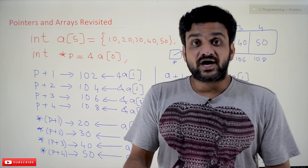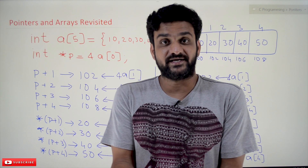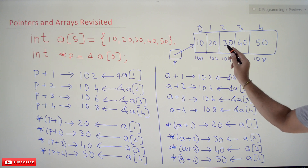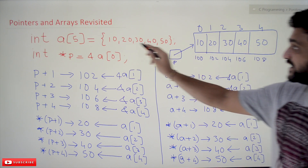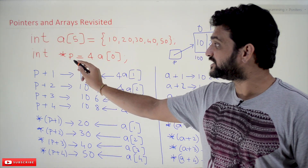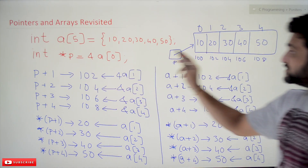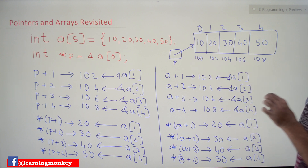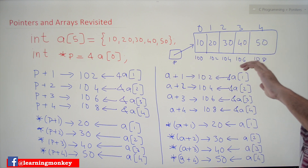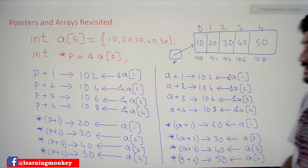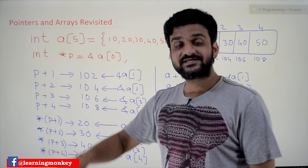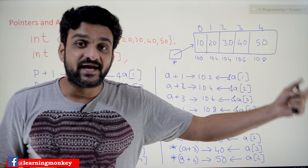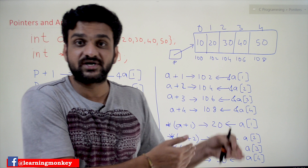In this class we'll try to have a more detailed understanding of pointers and arrays. In our previous class we discussed that an array has been created with values 10, 20, 30, 40, 50. A pointer P has been created pointing to the 0th position — a[0] means address 100, so P is pointing to that memory location. In the pointer arithmetic video we discussed that an integer can be added or subtracted from a pointer variable.